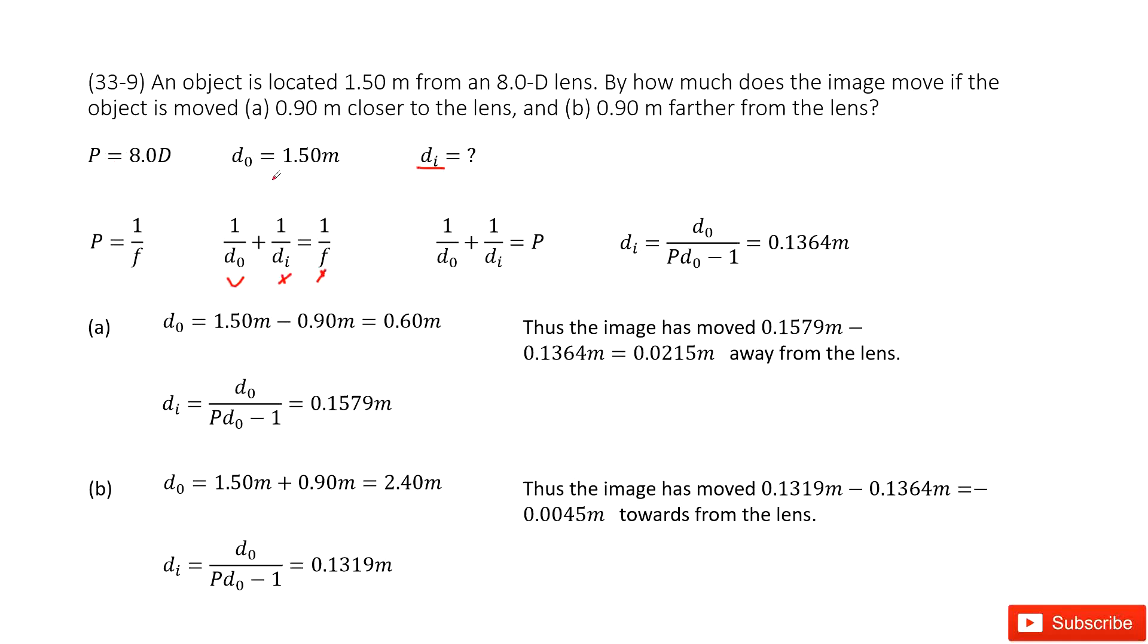Can we connect the power with the focal lens? Yes, by definition, the power is 1 over f. So we can input P to replace 1 over f, look like this one. Now we can see d0 is given, P is given, di we don't know. Convert it to equation.